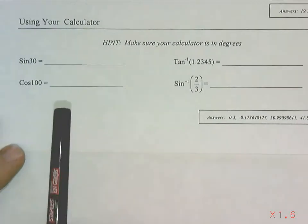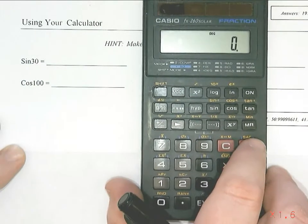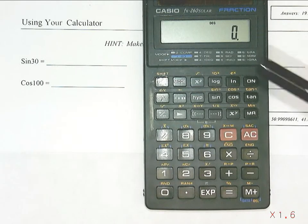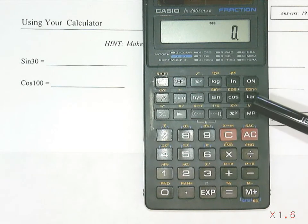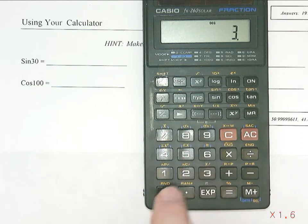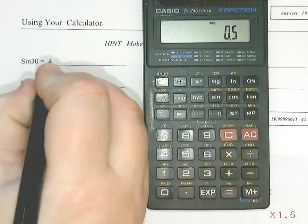So we're going to start by evaluating sine of 30. And I'm going to use the calculator where you do not see what you type in on the screen first. On these calculators, you're always going to press your sine, cosine, and tan buttons after you type in the number. So to do sine of 30, I actually would type in 30, and then press the sine button to get 0.5.